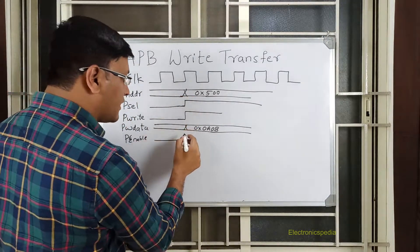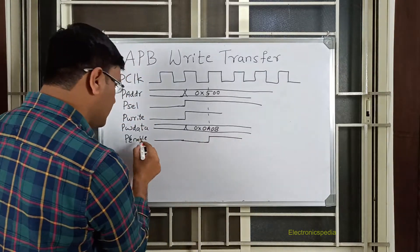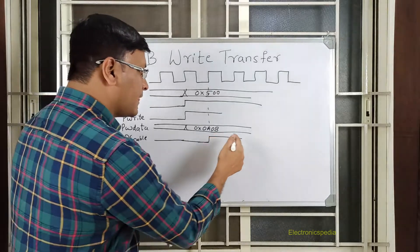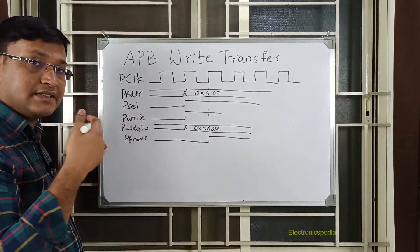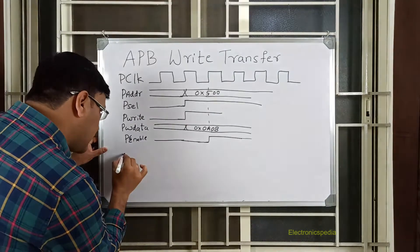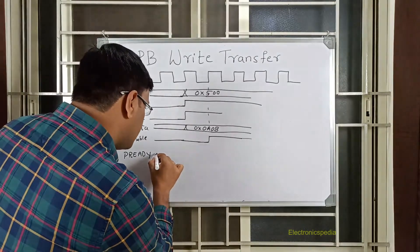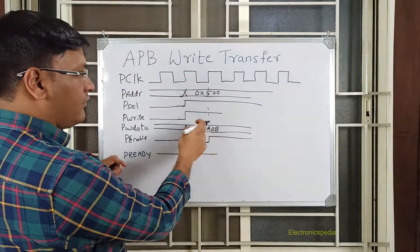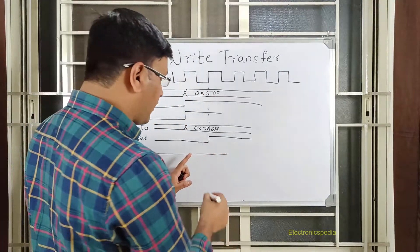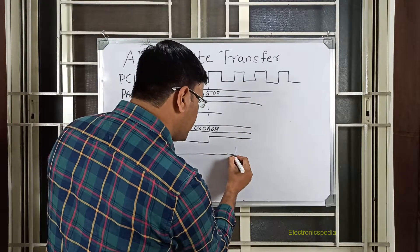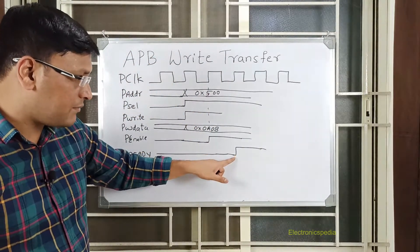After PSEL has been asserted, the next clock cycle PENABLE gets asserted. So this is my setup phase, and here my access phase begins. Now, when the slave is ready to accept the data, it asserts a signal called PREADY. Assume PSEL is asserted here, PENABLE is asserted here, and if the slave is not ready yet, but in this clock cycle it asserts PREADY — that means the slave is ready.